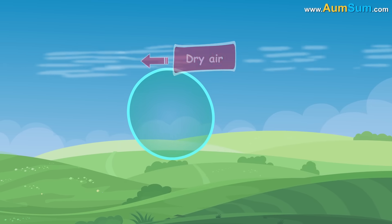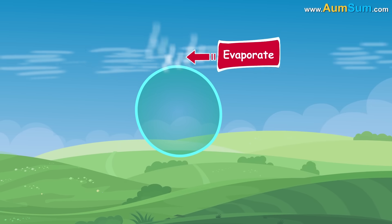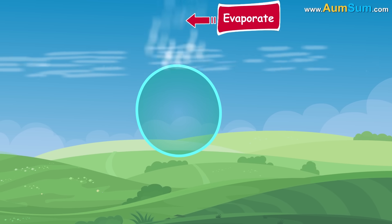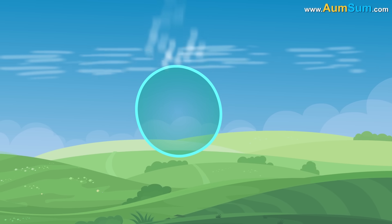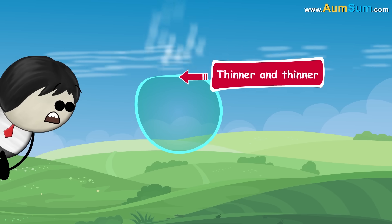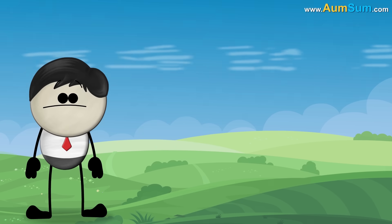Besides this, dry air also causes the water to evaporate from the tenuous layer. Hence, it gradually gets thinner and thinner and eventually the bubble pops.